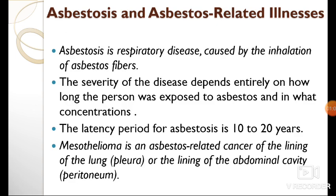The first one is asbestosis and asbestos-related illness. As we all know, asbestos is a naturally occurring mineral used for high temperature areas, decorative treatments, and binding of materials. The inhalation of the fibers can result in asbestos cancer and mesothelioma. Asbestosis is a respiratory disease caused by the inhalation of asbestos fibers. The fibers when inhaled reach the alveoli, where they create scarring of the lung tissues.